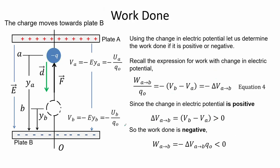Using the change in electric potential, let us determine whether the work done is positive or negative. Recall the expression for work with change in electric potential using equation 4. The electric potential is positive as shown, so the work done is negative.